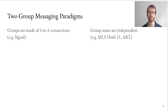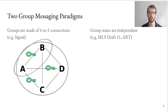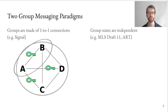In our work, we analyze two group messaging paradigms: one where groups are made up of one-to-one connections, and the second one where group states are independent. Here is an example for the first paradigm, where we have individual connections between each of the participants and we have two groups — the big circle and the small circle just including A and B. As you can see, the two groups share the use of the one-to-one channel between A and B.